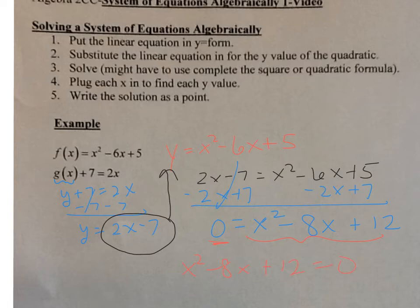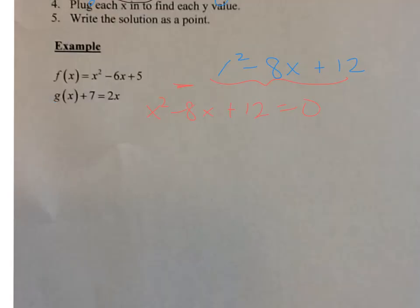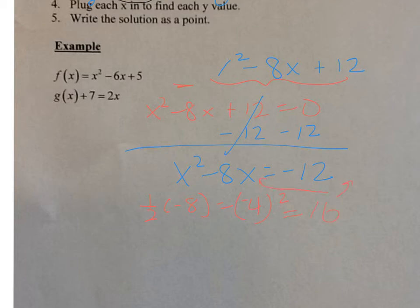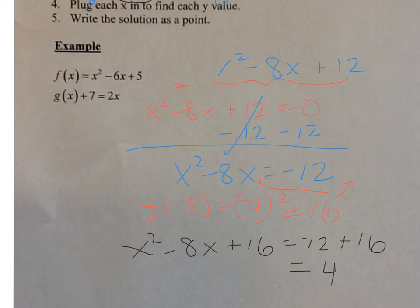This looks like a great equation to complete the square with. Notice that my leading coefficient in front of x squared is 1, and my middle term is even. First, I'll subtract 12 from both sides: x squared minus 8x is equal to negative 12. Now I'll do half the middle term — half of negative 8 is negative 4, squared is 16. I add 16 to both sides: x squared minus 8x plus 16 equals negative 12 plus 16, which is 4.